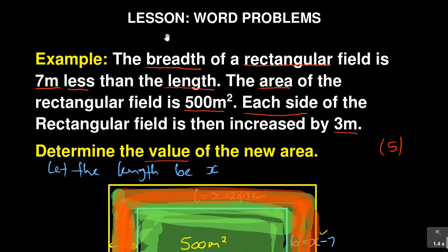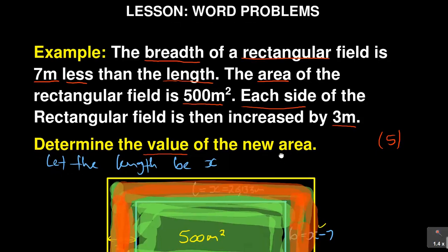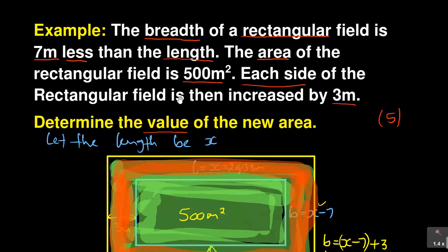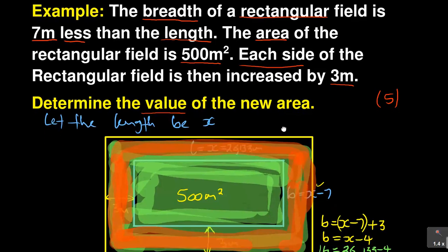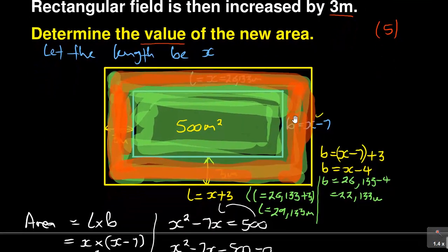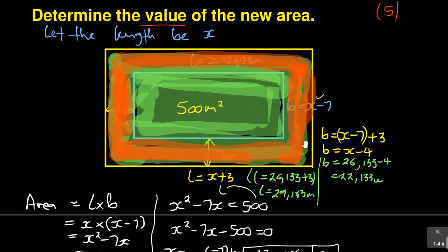Let me draw you back to that question. For those doing Mathematics 4, this was the question: the breadth of a rectangular field is seven meters less than the length; the area of the rectangular field is 500 square meters; each side of the rectangular field is increased by three meters — determine the value of the new area. It was a five-mark question.